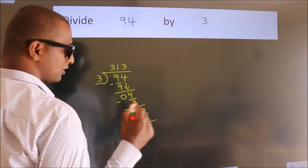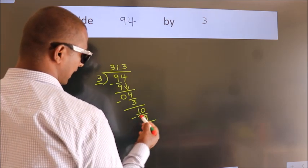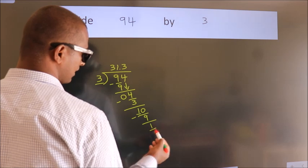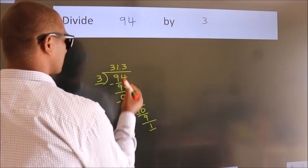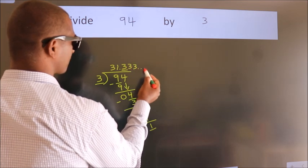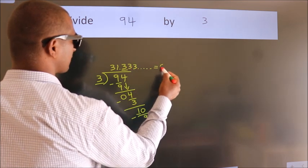Now you observe. We had 1 here. And we got 1 again. That means this number keep on repeating. So this is our quotient.